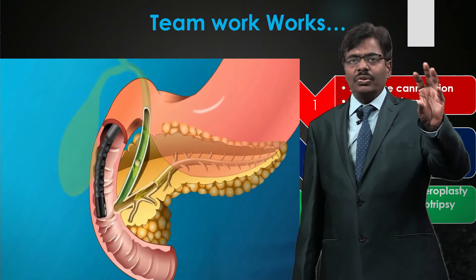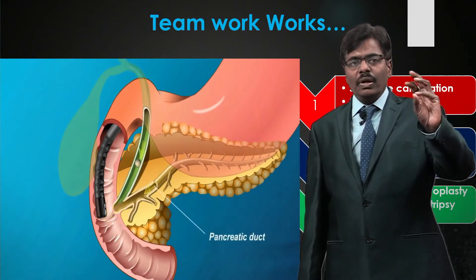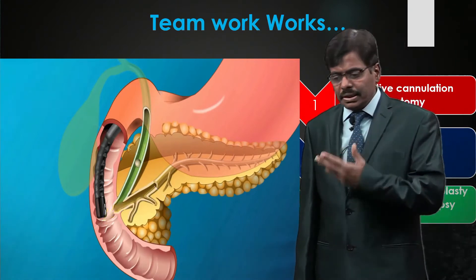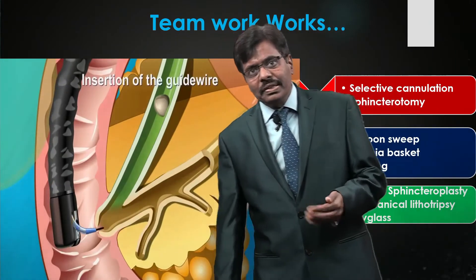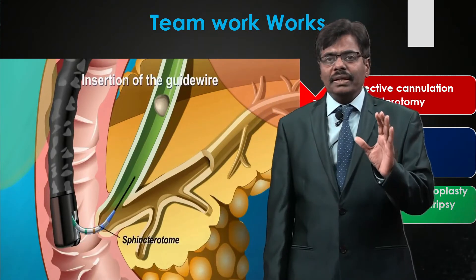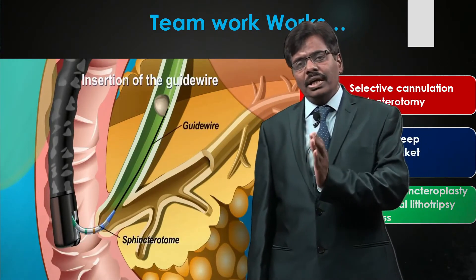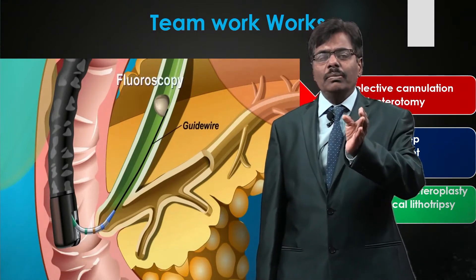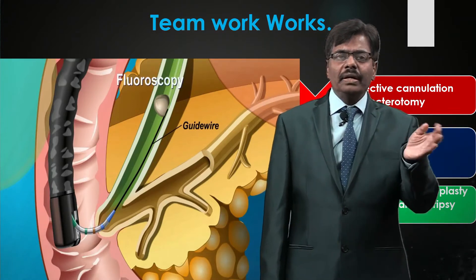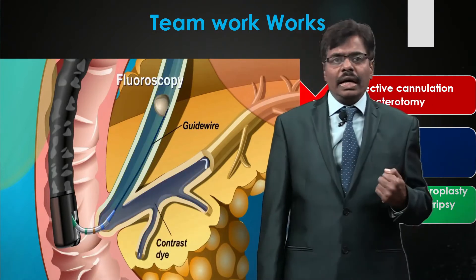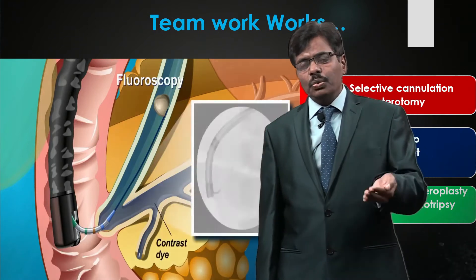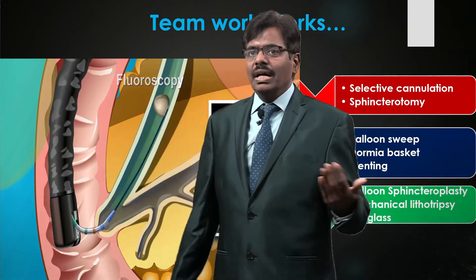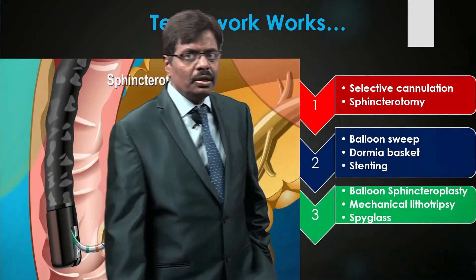Once in D2, facing the ampulla — thanks to shortening of the scope — you can selectively cannulate the bile and pancreatic ducts. Today's aim is to reach the ampulla. Module 3 will cover selective bile duct cannulation, pre-cut techniques, and pancreatic cannulation. Module 4 will address complications, challenges, and solutions, and finally we will have a panel discussion.